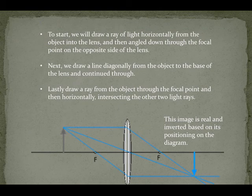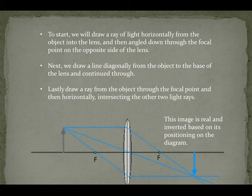To start, we'll draw a ray of light horizontally from the object into the lens, and then angle down through the focal point on the opposite side of the lens. Next, we draw a line diagonally from the object to the base of the lens and continue through. Lastly, draw a ray from the object through the focal point, and then horizontally, intersecting the other two light rays. This image is real and inverted based on the positioning of the diagram.